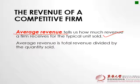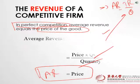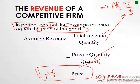Average revenue tells us how much revenue a firm receives from a typical unit sold. Average revenue is calculated by dividing total revenue by quantity. In every kind of market, average revenue is equal to the price. Here's the mathematical proof: average revenue equals total revenue divided by quantity; total revenue equals price times quantity; the quantity terms cancel, so average revenue equals price. If a question asks for a company's average revenue, the answer is simply the market price.